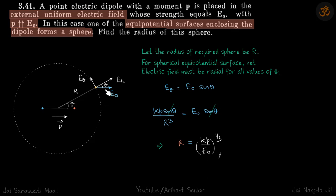So E theta should be equal to E naught sine theta. You'll see that sine theta will cancel out. This is a standard result for E theta in the case of a dipole. Sine theta gets canceled, and you get R equals Kp by E naught to the power 1/3, which is our answer.